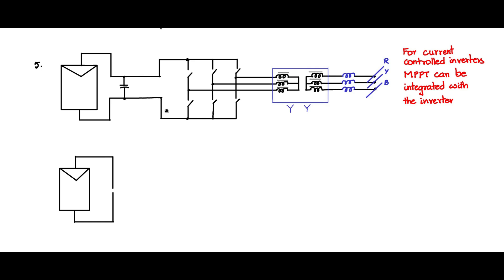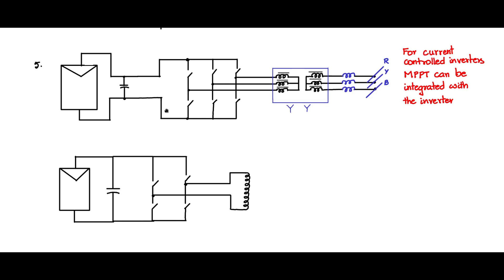In the single-phase topology, the PV module is connected to a single-phase inverter containing just two bridge arms. The centers of the bridge arms are connected to a single-phase transformer, and the secondary of the transformer is connected through an inductor to the grid line and neutral. This is the single-phase equivalent of the three-phase circuit, performing the same function with MPPT integrated into the current-controlled inverter.